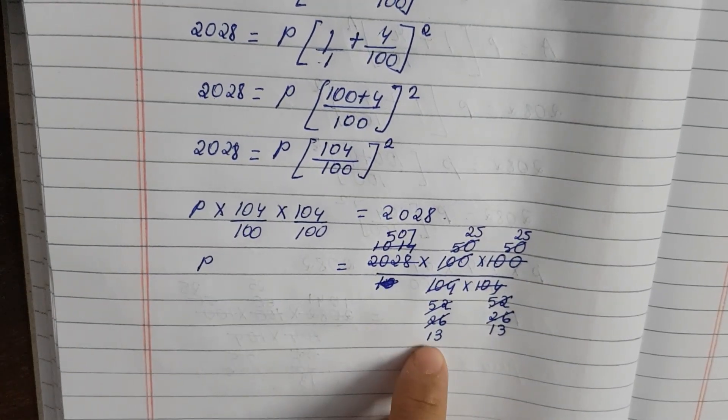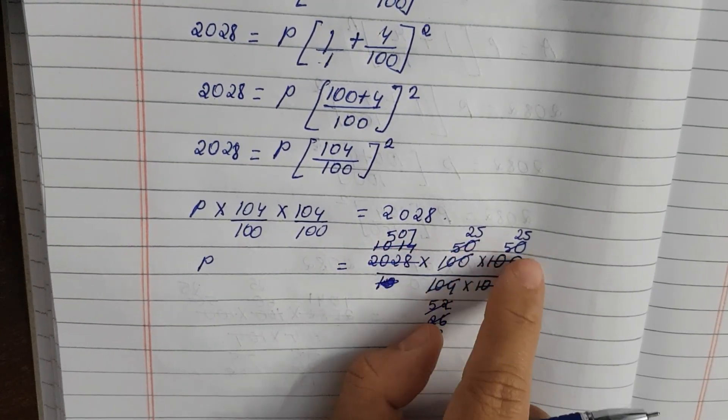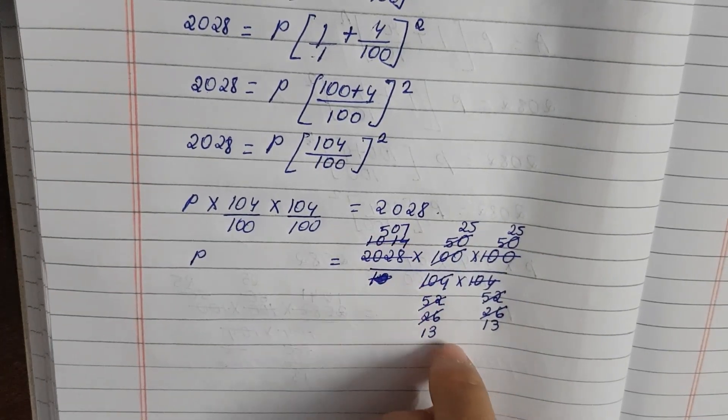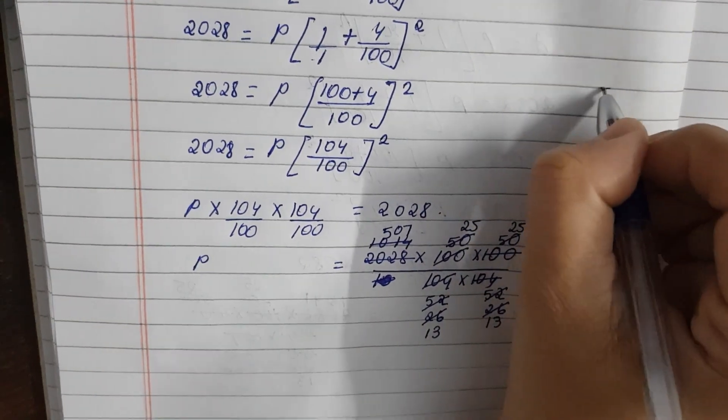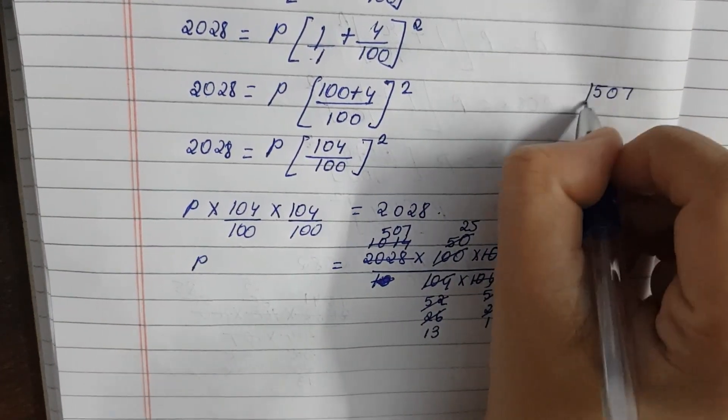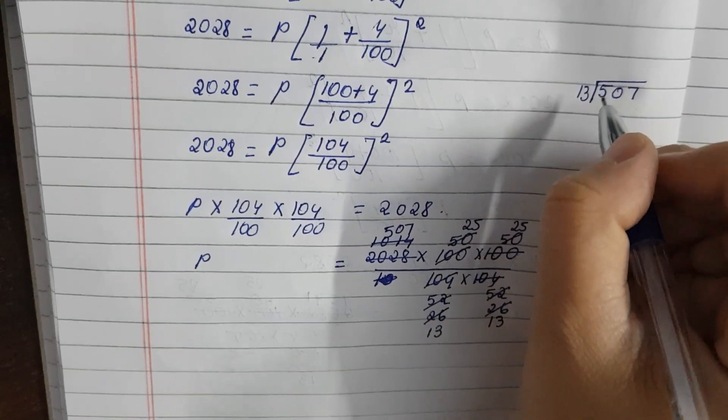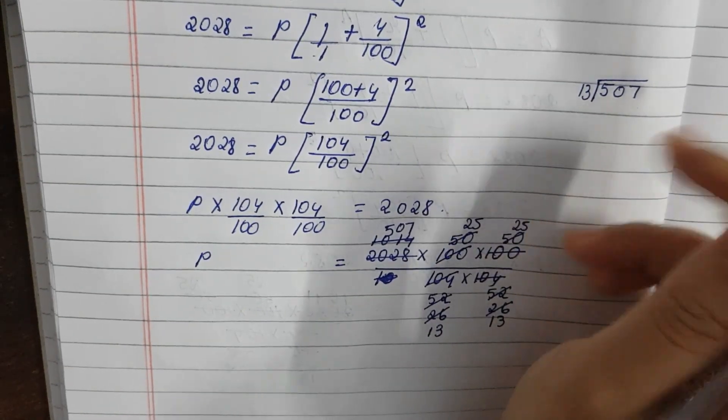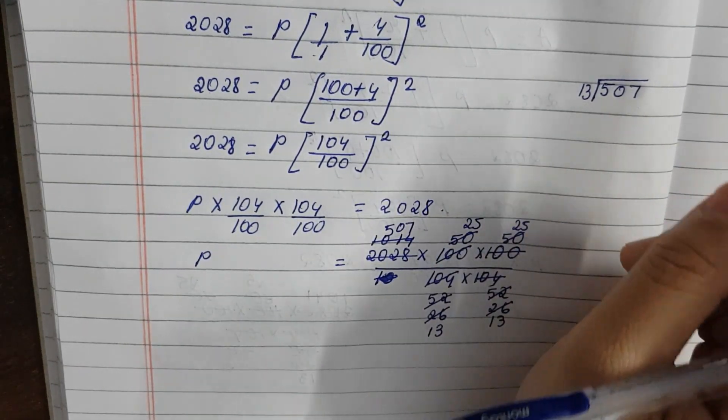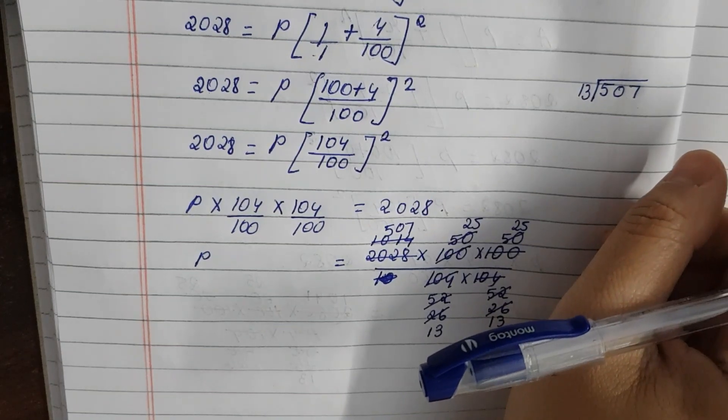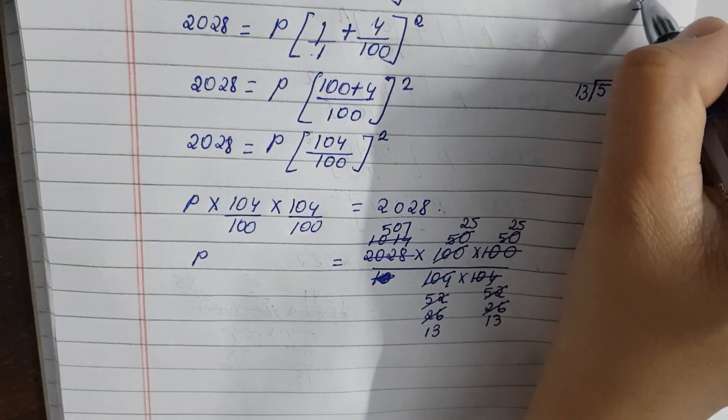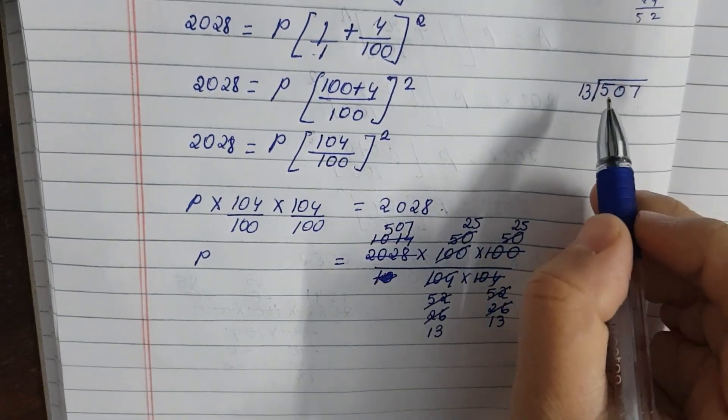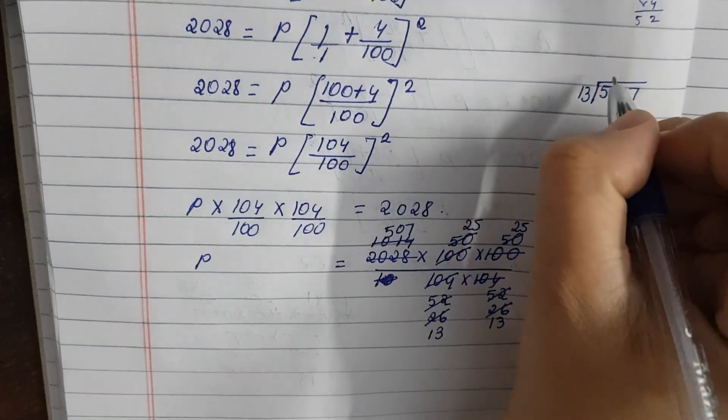Now 13 is 507, 25. 25 and 13 is 507. So 13 is 507 divided by 13. So 13 is 39.